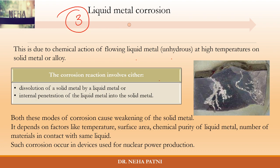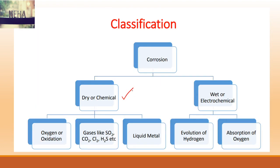Today I have discussed dry or chemical corrosion, which can occur due to three types: when there is excess oxygen, when gases other than oxygen are present, or when there is liquid metal. I hope you understood dry corrosion. In the coming video I'm going to discuss wet corrosion. If you understood the content, please hit a like and subscribe to the channel — that will give me motivation. Thank you so much.